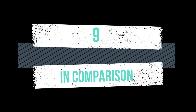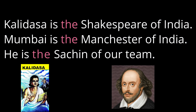The ninth point is: 'the' is used in comparison. When we compare one person to another person, or one place to another place, before the name of the second noun we use 'the'. For example: 'Kalidasa is the Shakespeare of India' — here we are comparing Kalidasa and Shakespeare, both of equal greatness. 'He is the Sachin of our team.' 'Mumbai is the Manchester of India' — both are known for textile industries and business. 'Sarojini Naidu is the Nightingale of India.'